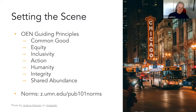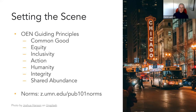Setting the scene: for some of you, this may be your first firsthand experience with the Open Education Network, and that is one of the things I love about Pub 101 — the opportunity to meet more of you and introduce you to the OEN community. We are a community of people working to advance open education, and our members now represent more than 1,700 institutions in the U.S., Canada, Australia, and the U.K.